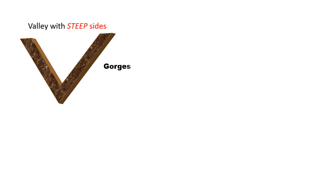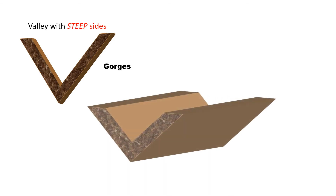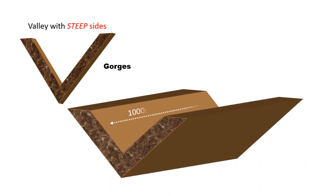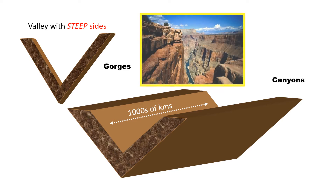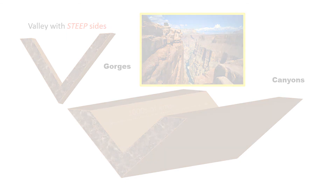One feature of gradation is the gorge — a valley with very steep sides. And if a gorge extends for hundreds and thousands of kilometers, then it is referred to as a canyon. One such example is the Grand Canyon in the United States.